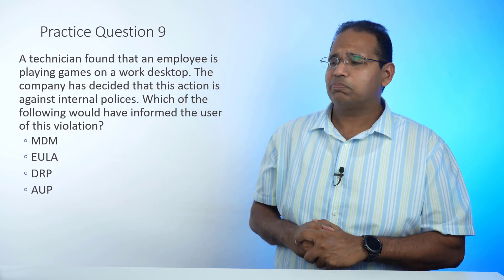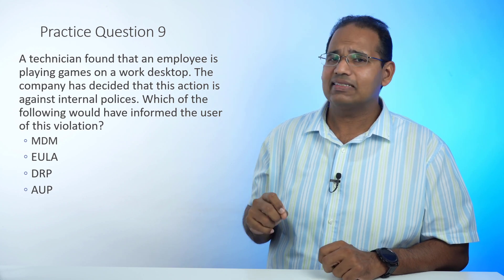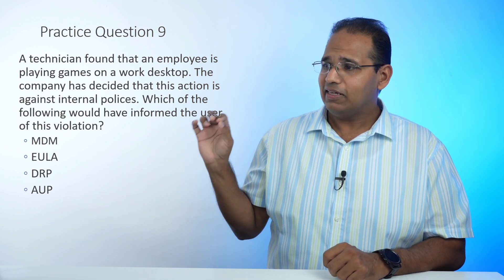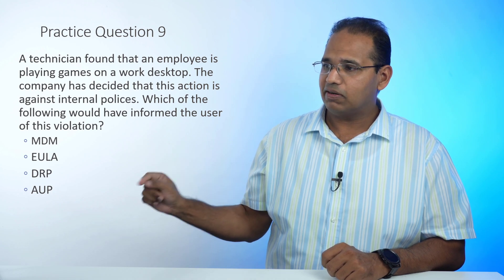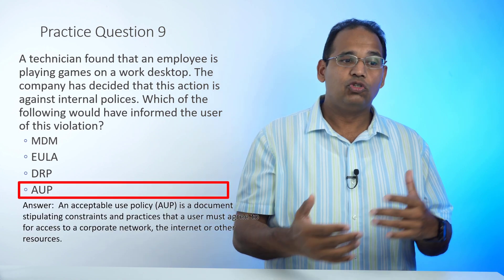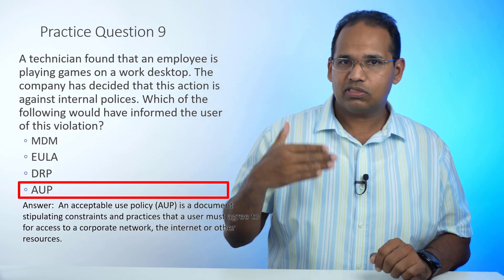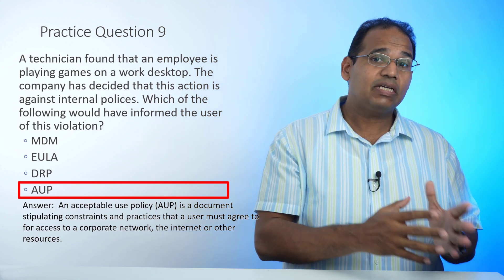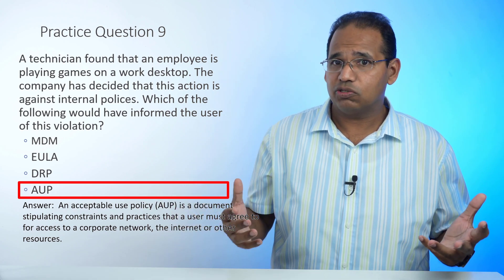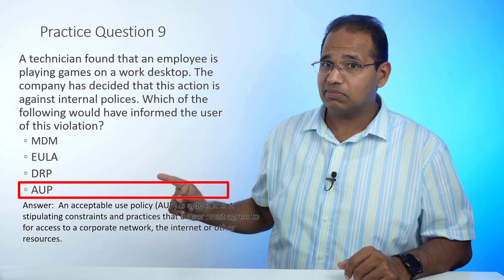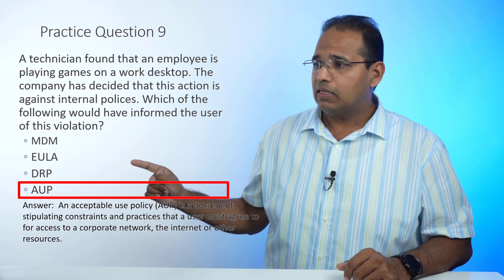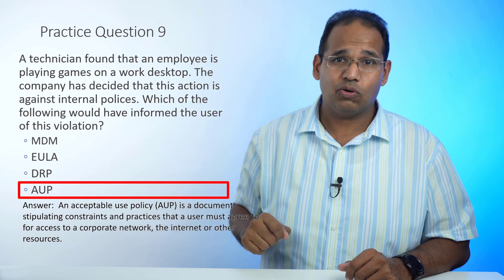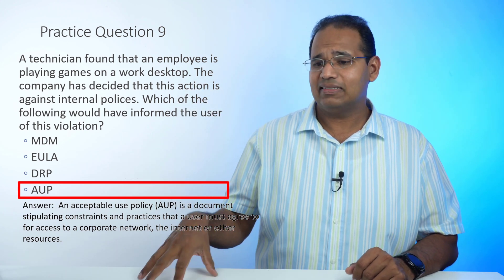Practice question number nine: A technician found that an employee is playing games on a desktop, which the company considers against internal policy. Which of the following would inform the user of this violation? The answer is AUP — Acceptable Use Policy. This organizational policy states what you can and cannot do on company computers. Disaster Recovery Planning is how a company rebuilds after a disaster. EULA is the license agreement when you install software. MDM is Mobile Device Management, used to manage mobile devices like phones.